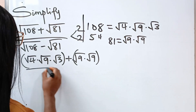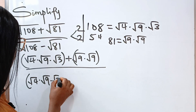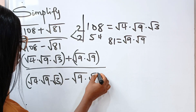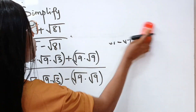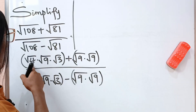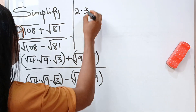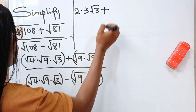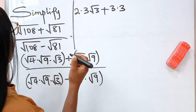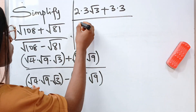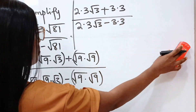9 times 9 is still 81. Divided by the same thing: root 4 multiplied by root 9 multiplied by root 3. Minus root 9 multiplied by root 9 as well. So we solve this: root 4 gives us 2, multiplied by root 9 gives us 3, and we have root 3 here. Plus 3 multiplied by 3. Everything divided by 2 multiplied by 3 root 3 minus 3 multiplied by 3.